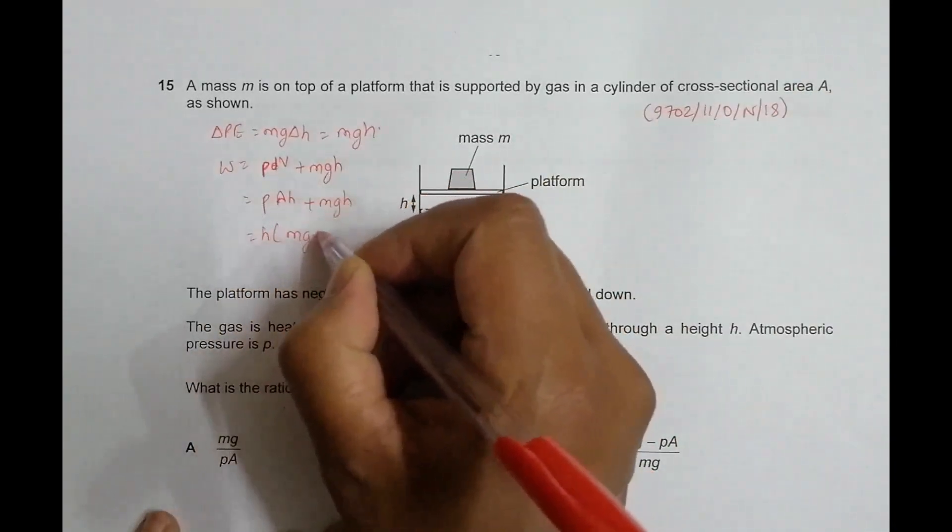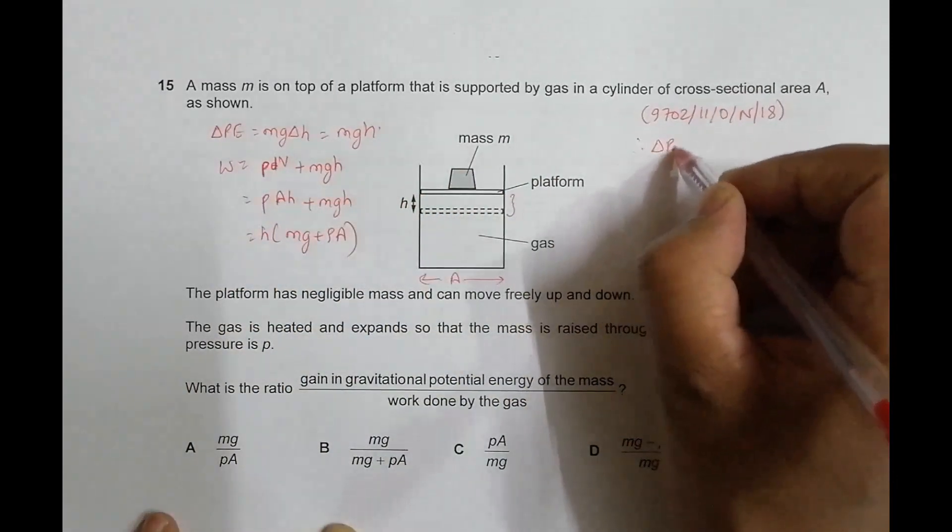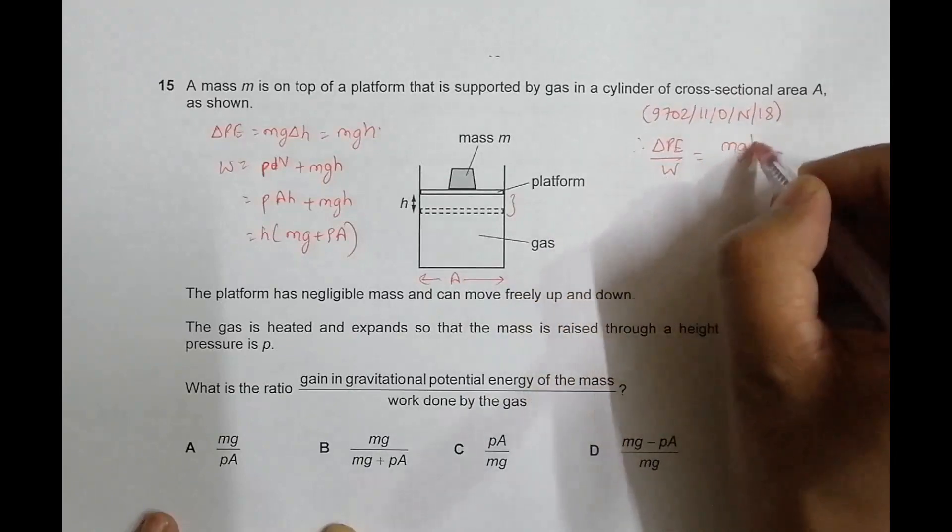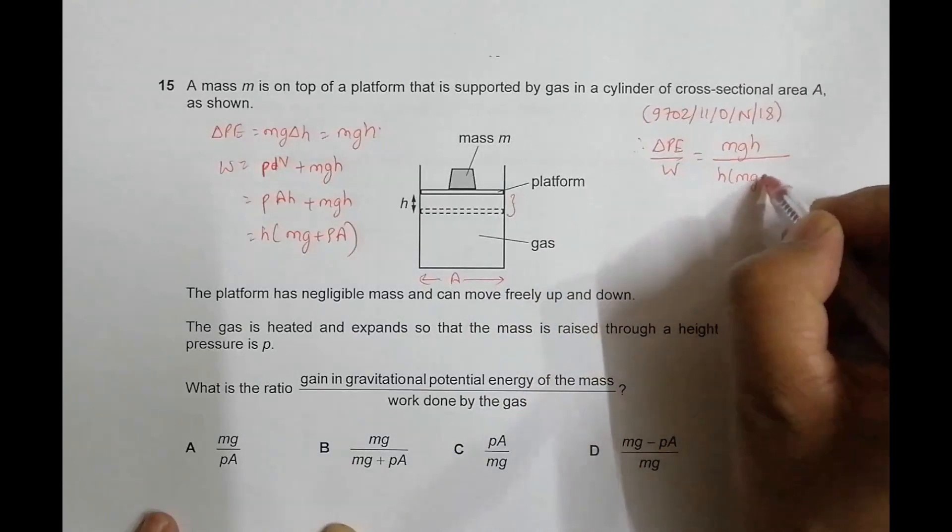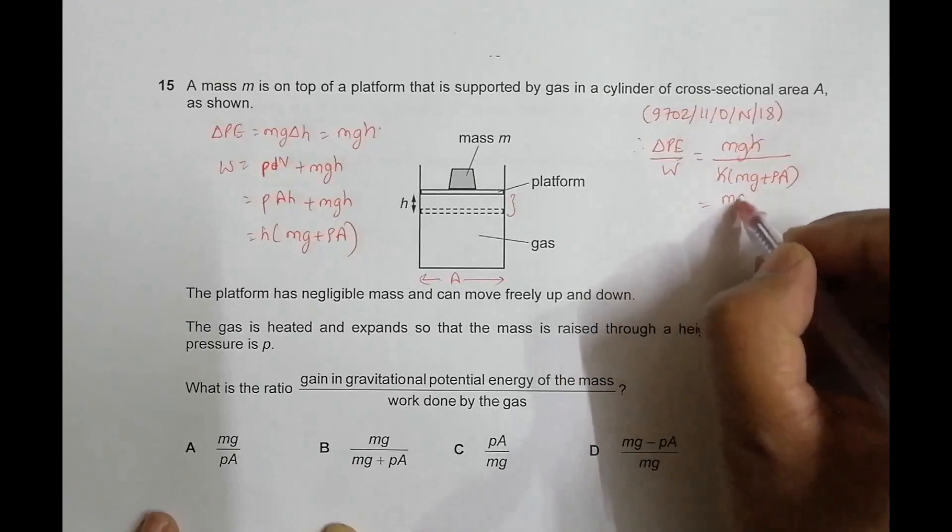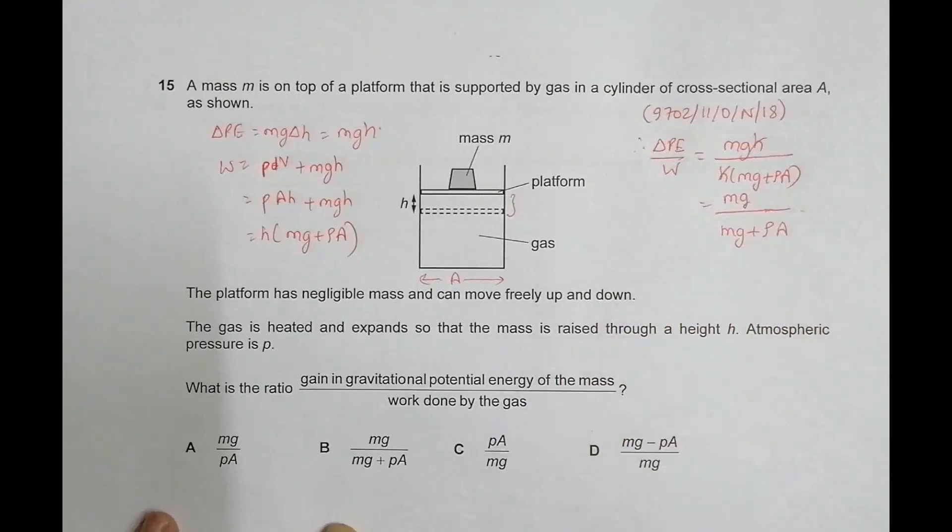Therefore, the ratio equals delta PE by W, which is mgh divided by h times (mg plus PA). This gives us: h and h cancel, and it becomes mg divided by (mg plus PA). Going through all the choices, the correct choice becomes choice number B.